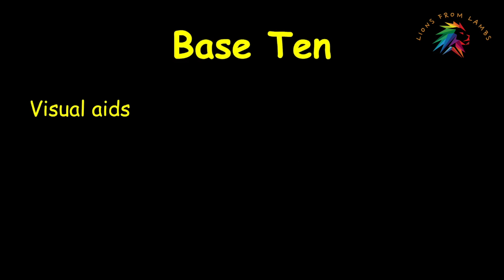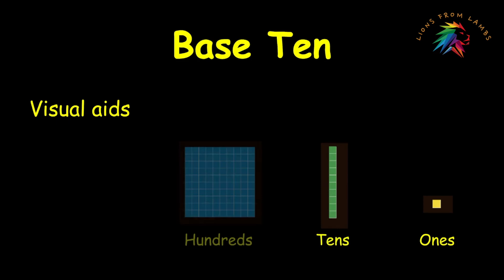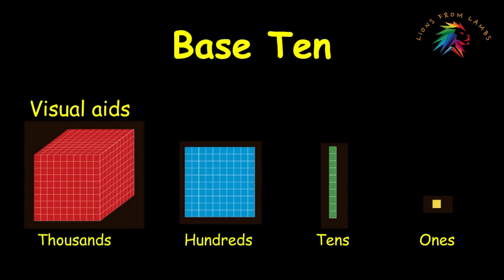The blocks themselves include units, which stand for the ones; rods, which stand for tens; flats, which stand for hundreds; and cubes, which stand for thousands. Each of these corresponds to a power of 10, and that's why it's called the base 10 — that emphasizes the foundational role of the number 10 in our decimal system.